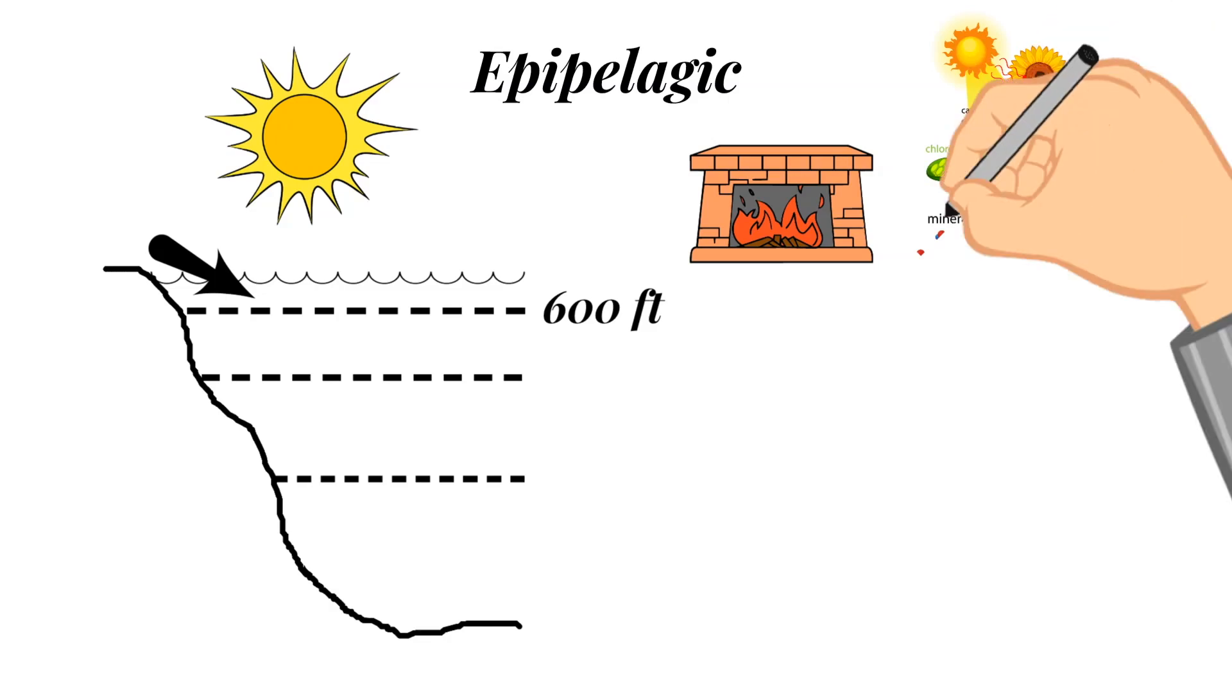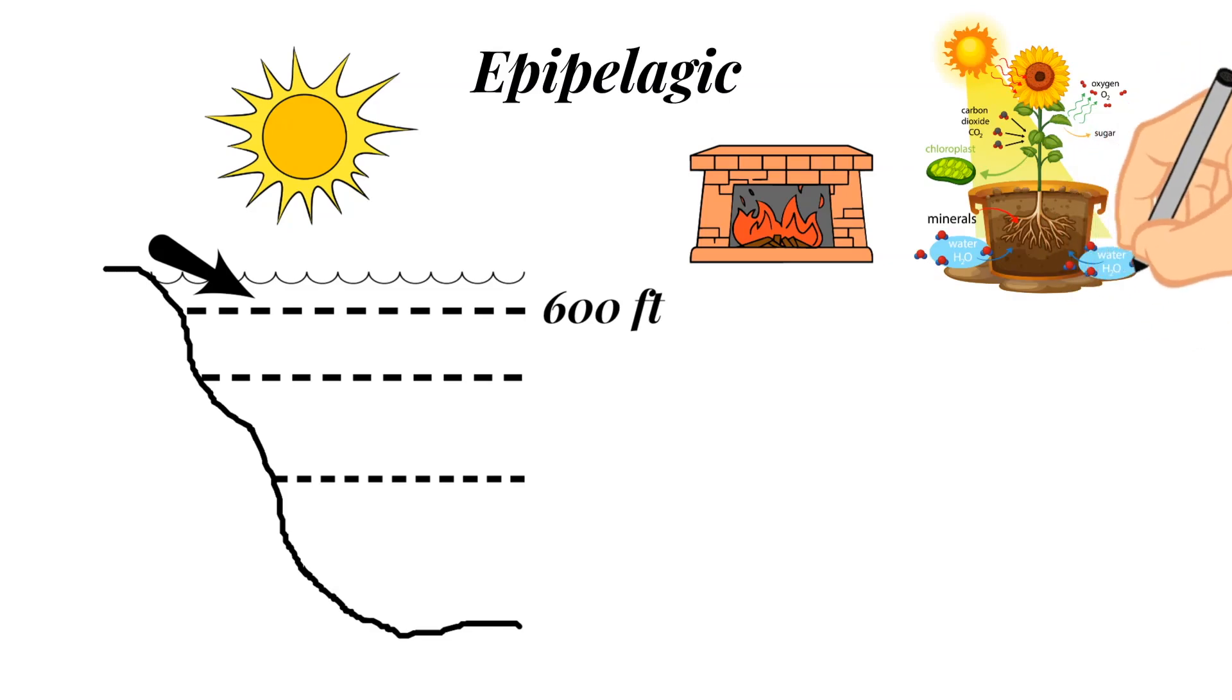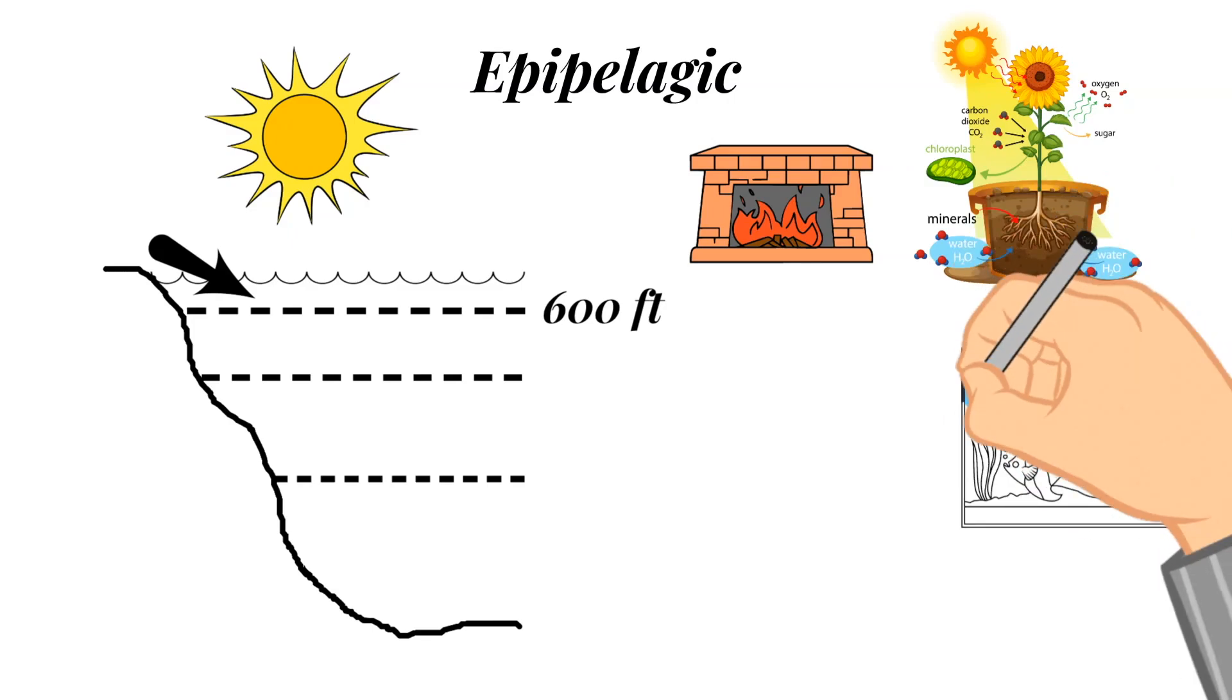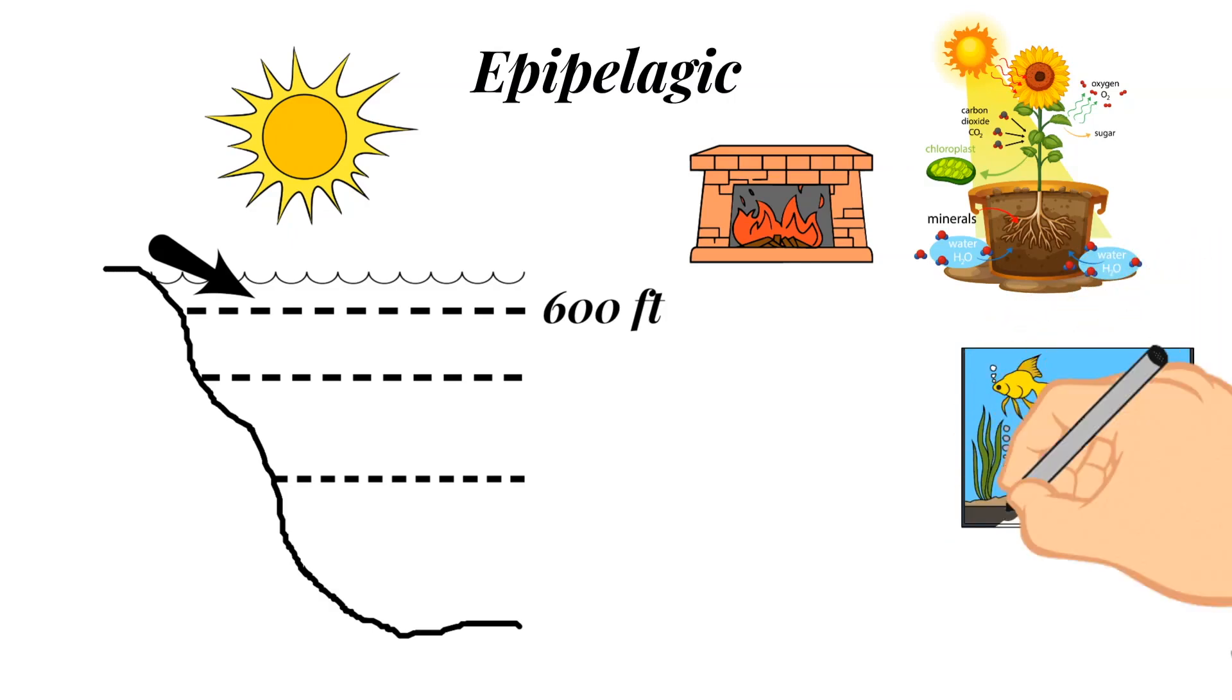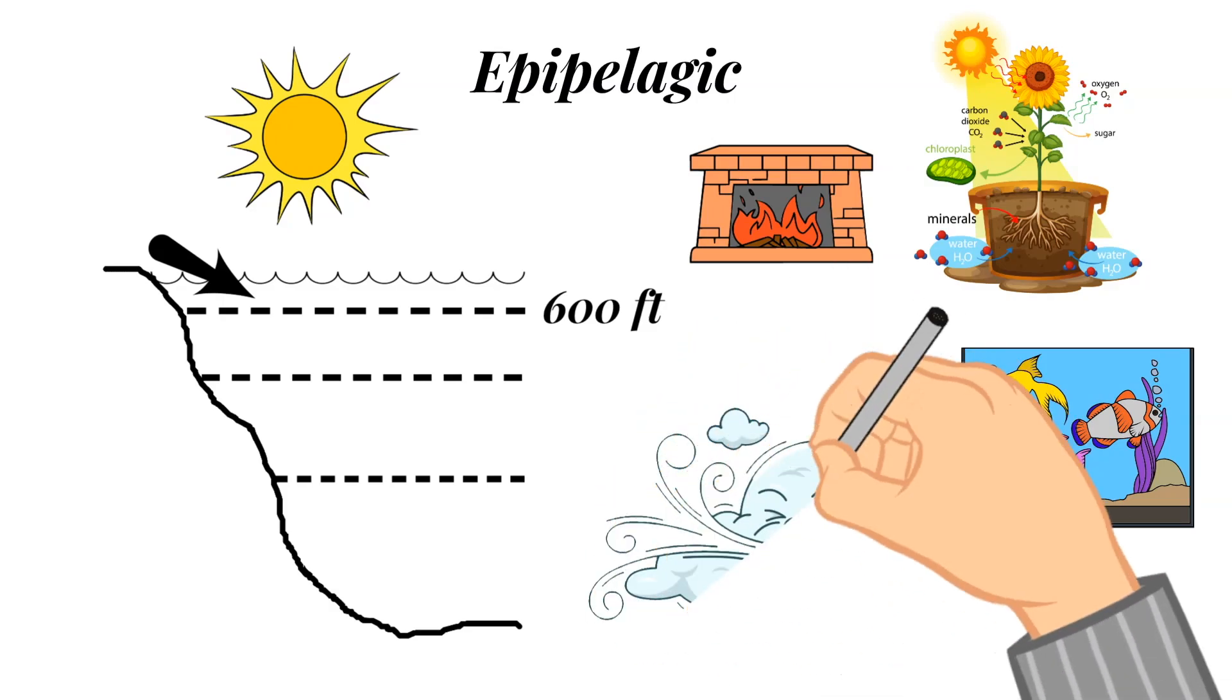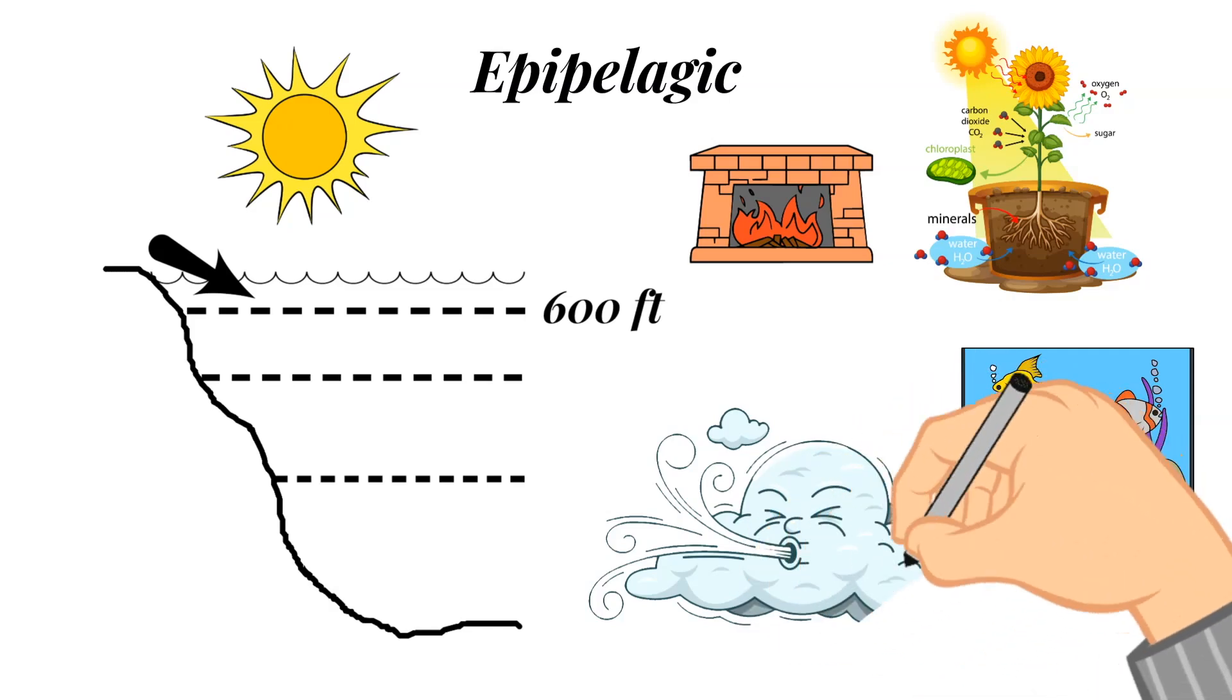Now, what's photosynthesis? We talked about this in a previous video, but it is essentially the process that plants used to convert sunlight and water to energy. And so because of this sunlight and compared to all the other layers, this layer has the most life and the most activity. Another aspect of this layer is that the wind affects it and it always keeps it mixed and allows the sun's heat to be distributed vertically.